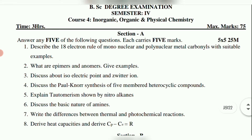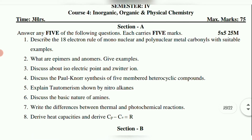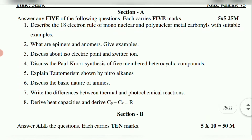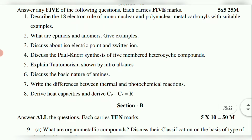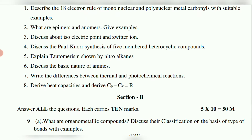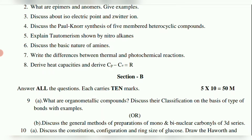4th Semester Chemistry Paper 1 and Paper 2 are quite heavy, so start preparation and finish at least two to three chapters for easy passing. Question 9a: What are organometallic compounds? Discuss their classification on the basis of types of bonds with examples. Question 9b: Discuss the general methods of preparation of mono and binuclear carbonyls of 3d series.